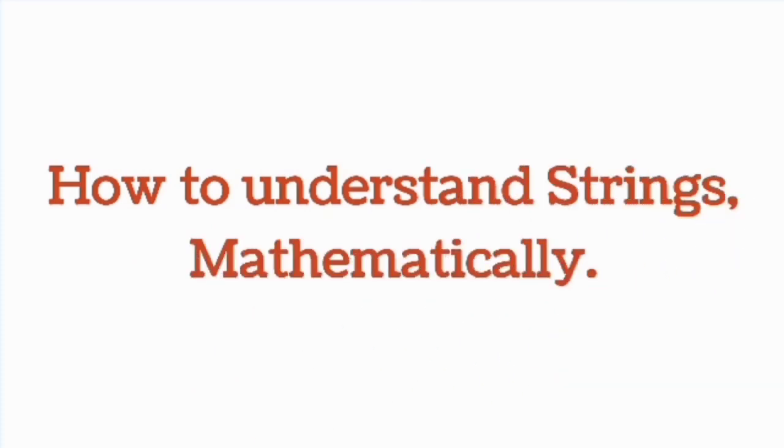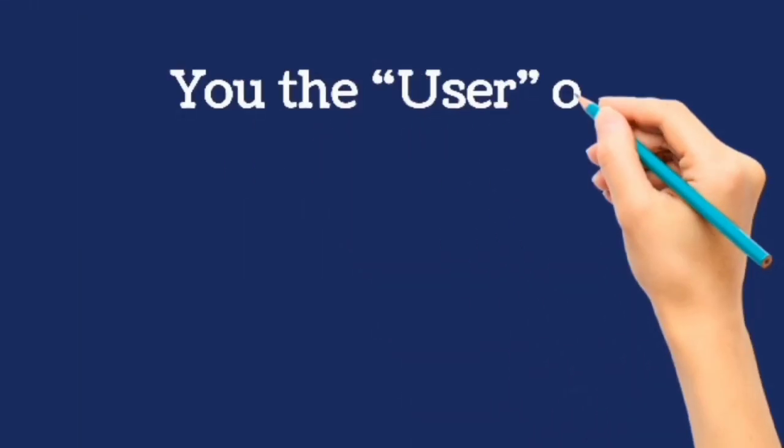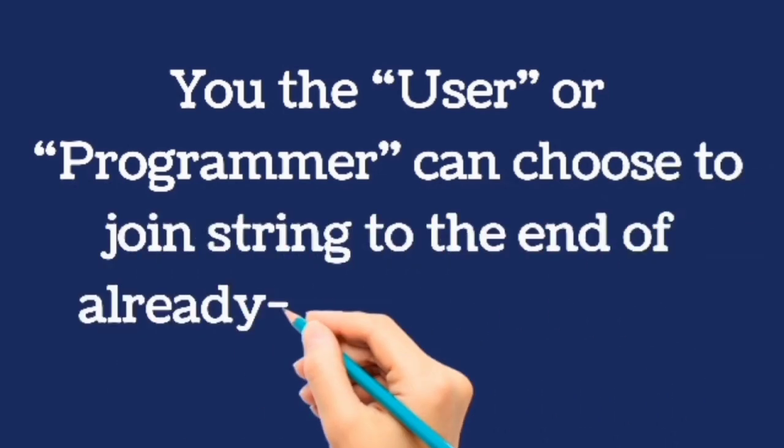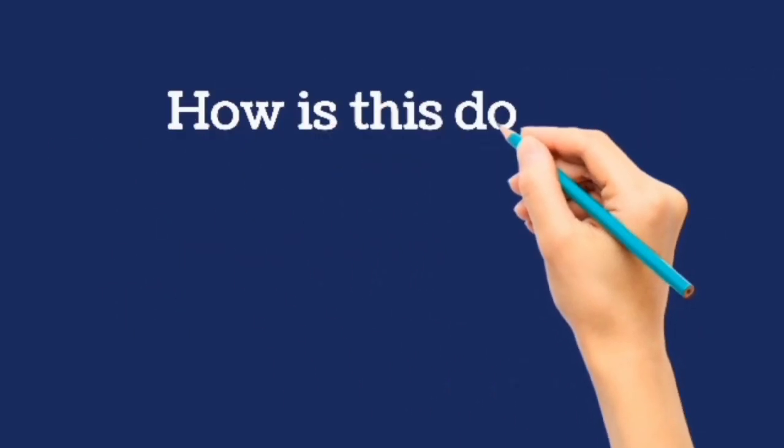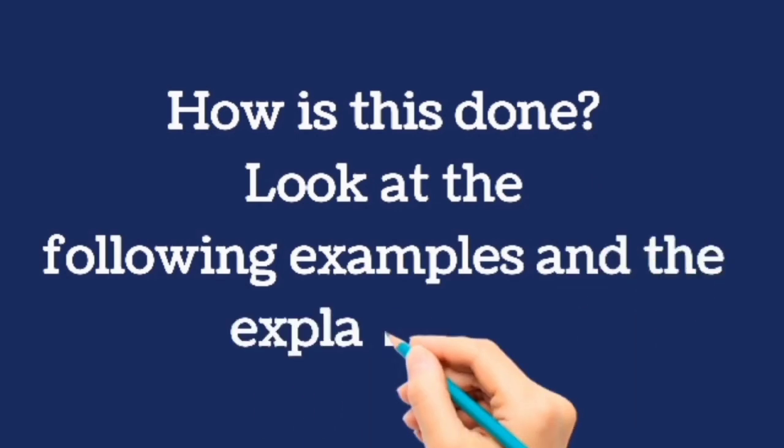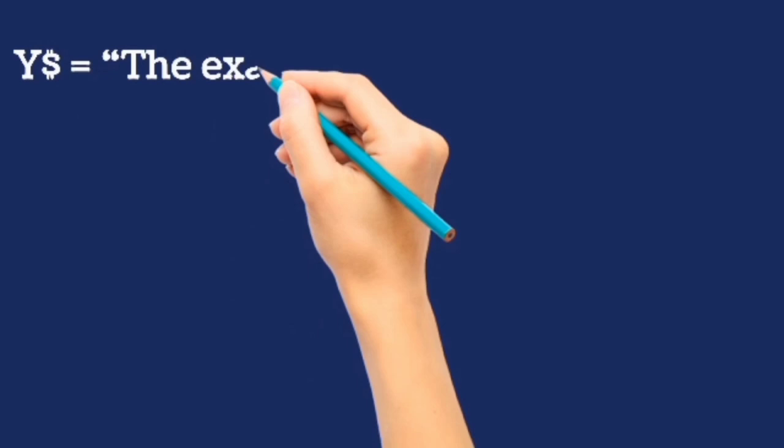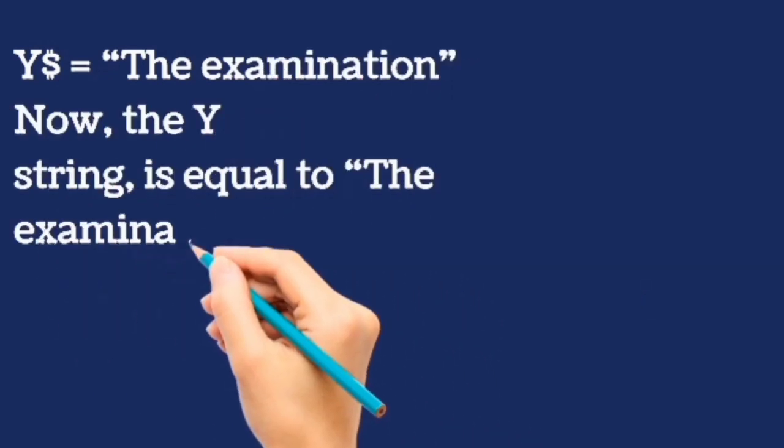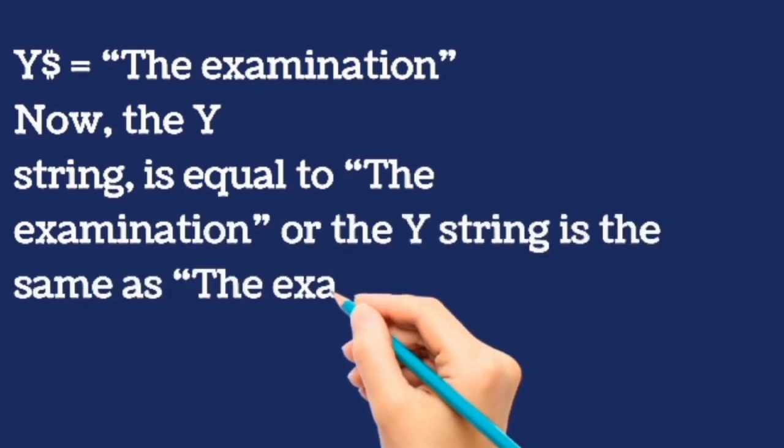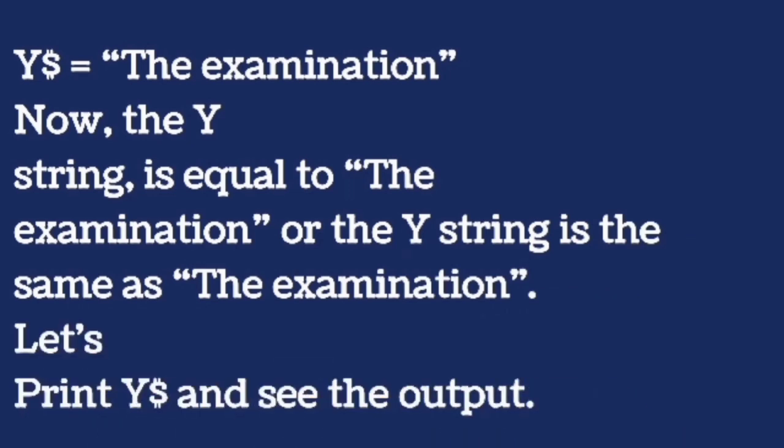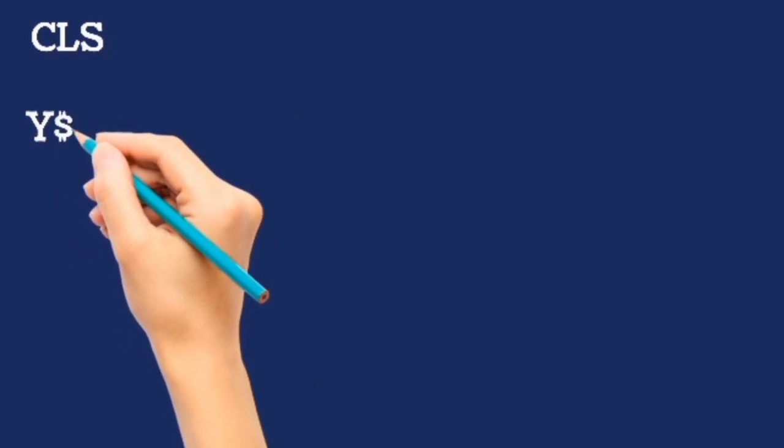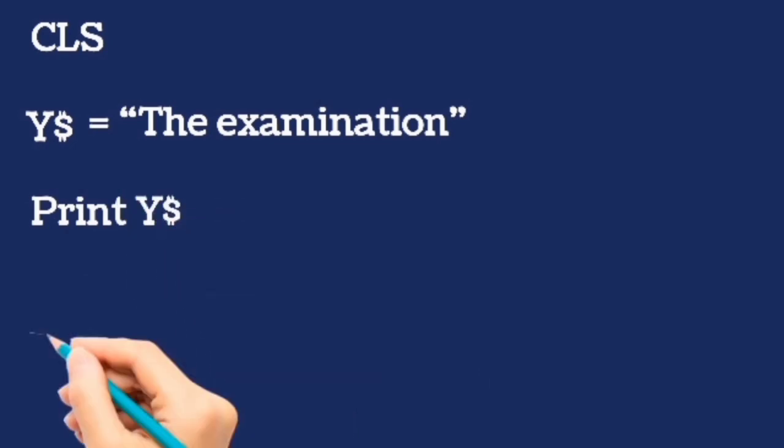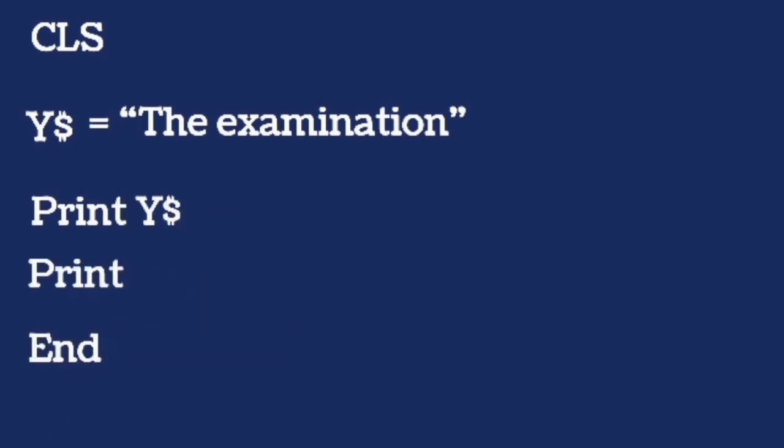How to understand strings mathematically. You the user or programmer can choose to join strings to the end of already existing string variable. How is this done? Look at the following examples and the explanation. Y string is equal to the examination. Now, Y string is the same as the examination. Let's print Y string and see the output when it undergoes execution. So our Y string is the same as the examination because it is equal to the examination. Let's clear the screen and work it out. Print Y string. This will print an empty space on our program, the examination.